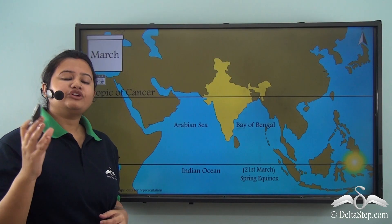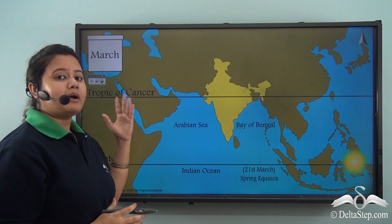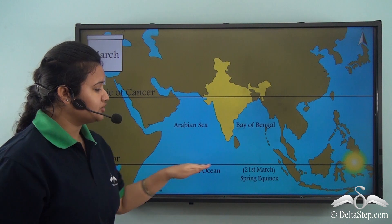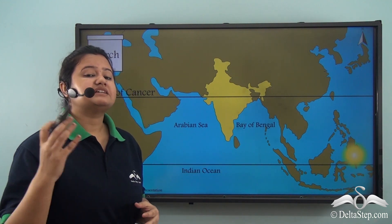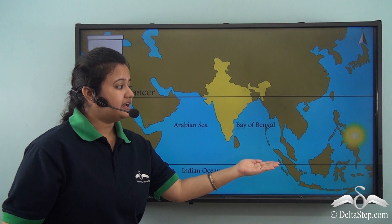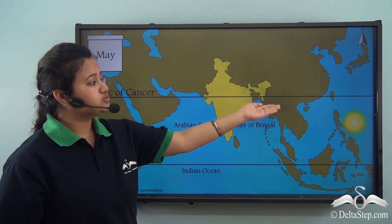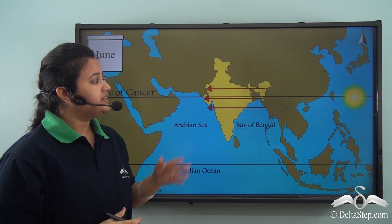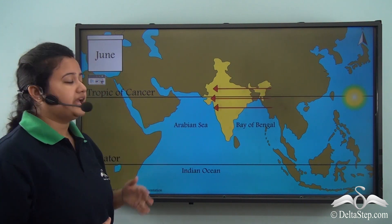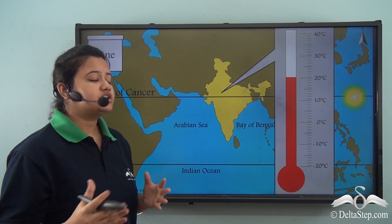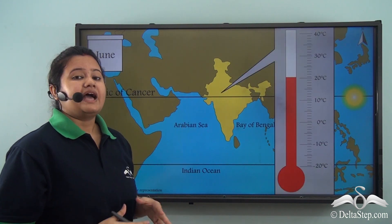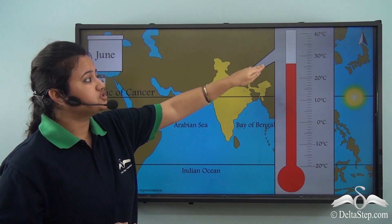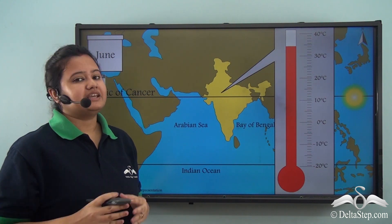As seen in the previous chart, summer season begins from March. We know that the sun is overhead the equator on 21st March — that is the spring equinox — after which the sun gradually starts to move northward towards the Tropic of Cancer until it is directly over it. When the sun is directly overhead the Tropic of Cancer, direct or vertical rays fall on it. As a result, the average temperature of the Indian subcontinent begins to increase and summer season arrives in India.